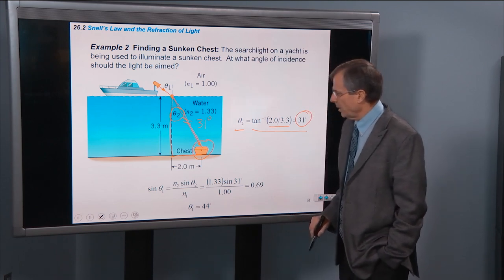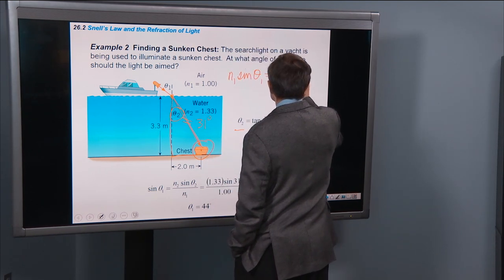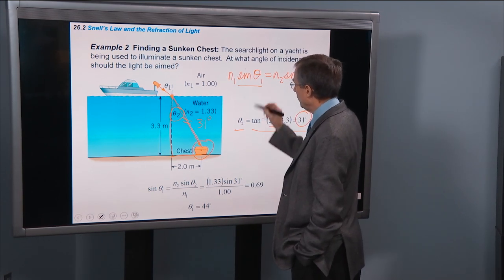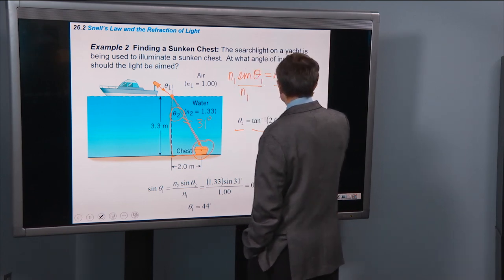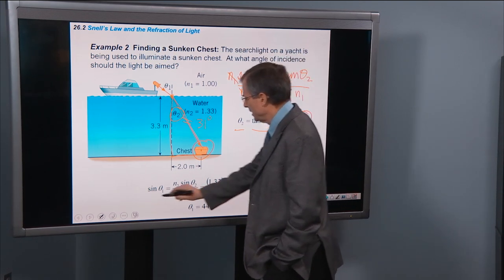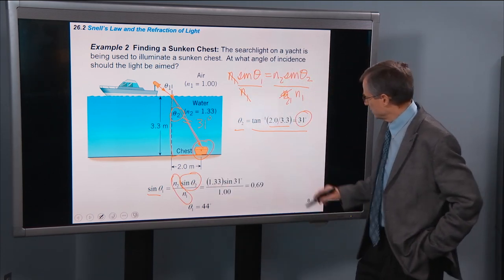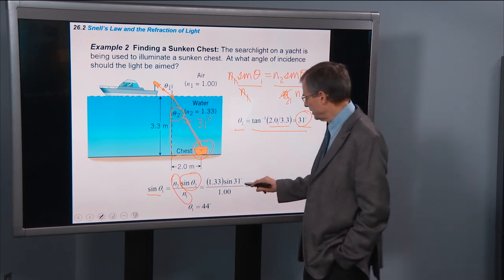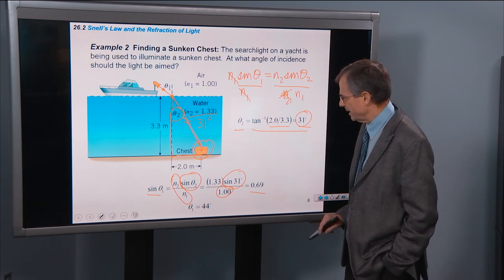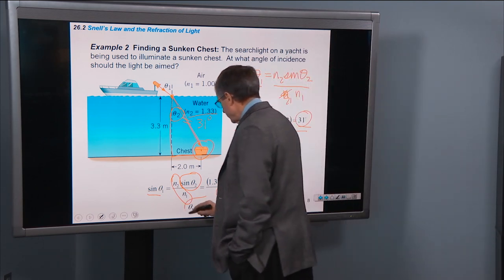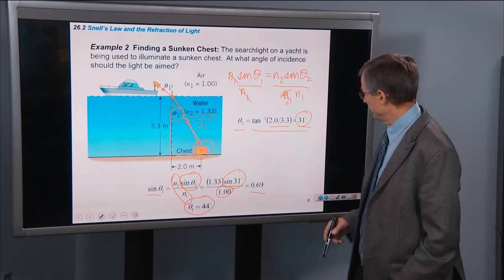But what we're looking for is θ1. Well, we know that N1 sin θ1 is N2 sin θ2. I want to solve this for θ1. I'm going to divide both sides by N1. The N1s cancel on this side, sin θ1 is N2 over N1, that's this bit here, times sin θ2. Plug in the numbers. We just found what θ2 is, 31 degrees. Plug that in here. Plug in N2, which is for water, over air. And that gives 0.69. Take the inverse sine of both sides, and we find that that angle must therefore be 44 degrees, which is indeed greater than θ2.